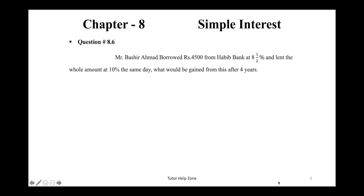Mr. Bashir Ahmed borrowed Rs. 4500 from Habib Bank at 8½% and lent the whole amount at 10% the same day. What would be gained from this after 4 years? Mr. Bashir Ahmed borrowed Rs. 4500 for 4 years at interest rate 8½%, and lent the same amount at 10%. Now we will find the profit and gain from simple interest.